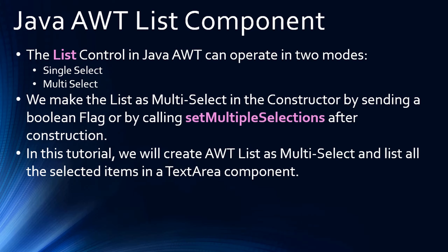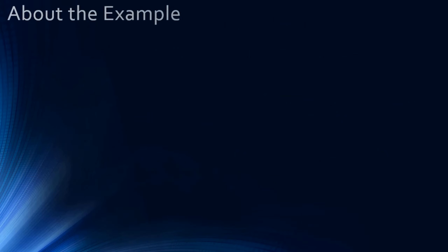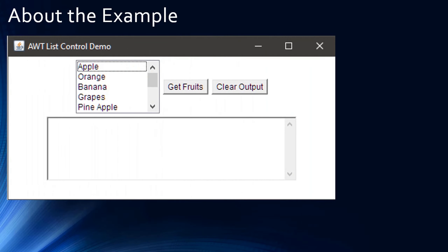In this tutorial, we will create an AWT list as a multi-select list and list all the selected items in a text area component. So this is the example we are going to create in this AWT tutorial. This control here is the AWT list control and you can select multiple list items.